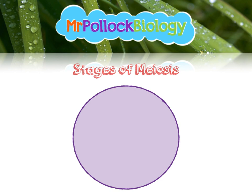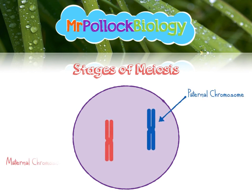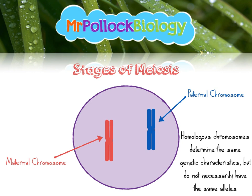Here's our nucleus with some chromosomes. Here's one from dad — the paternal chromosome — and here's one from mum — the maternal chromosome. We're only doing this with one chromosome each. These chromosomes are homologous, meaning they determine the same genetic characteristics but don't necessarily have the same alleles. So you might find blood group, eye colour, and hair colour on these chromosomes, but not necessarily the same forms of those genes. They will be at the same loci on the chromosomes.